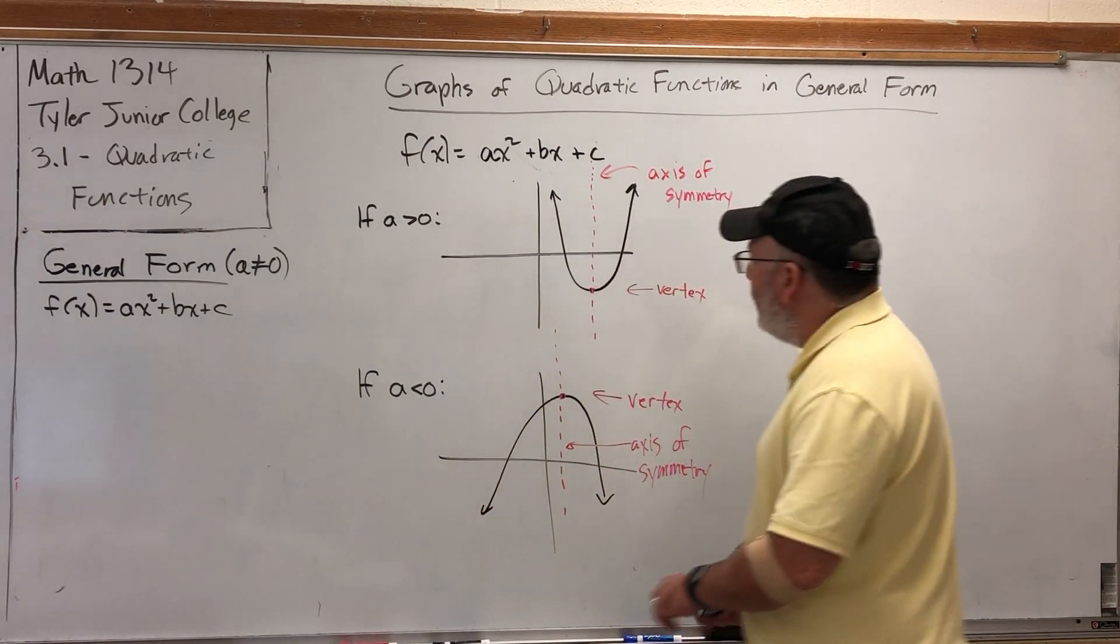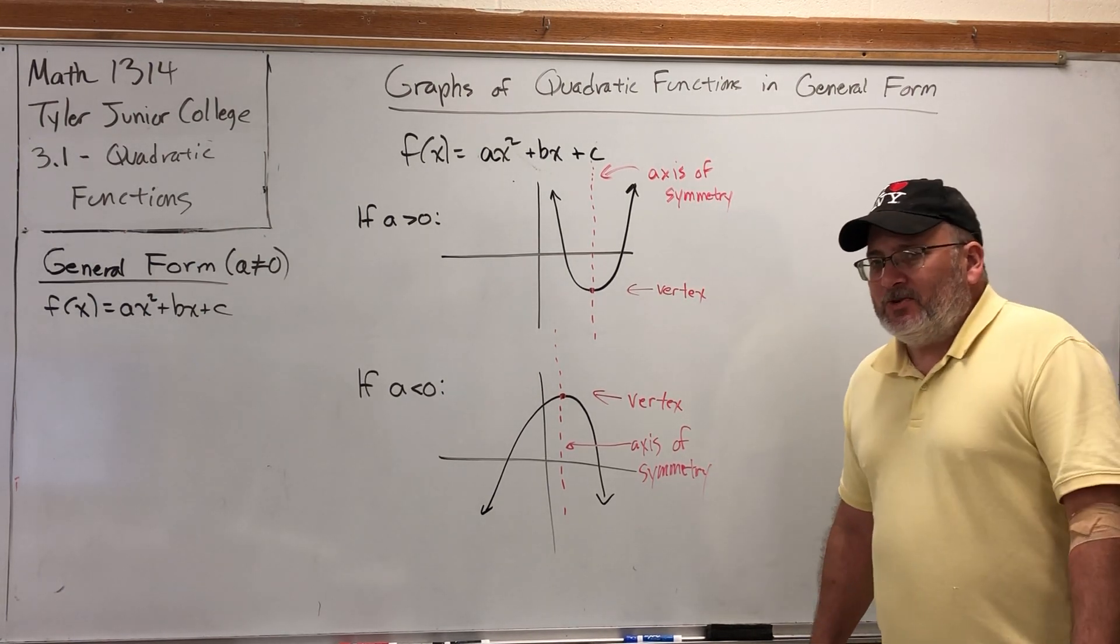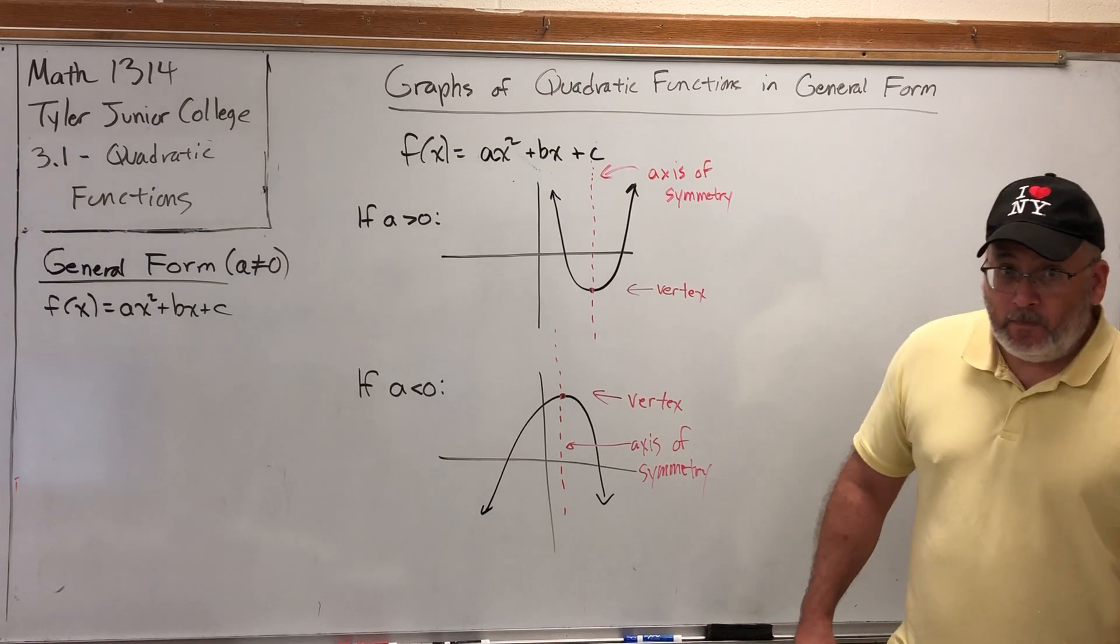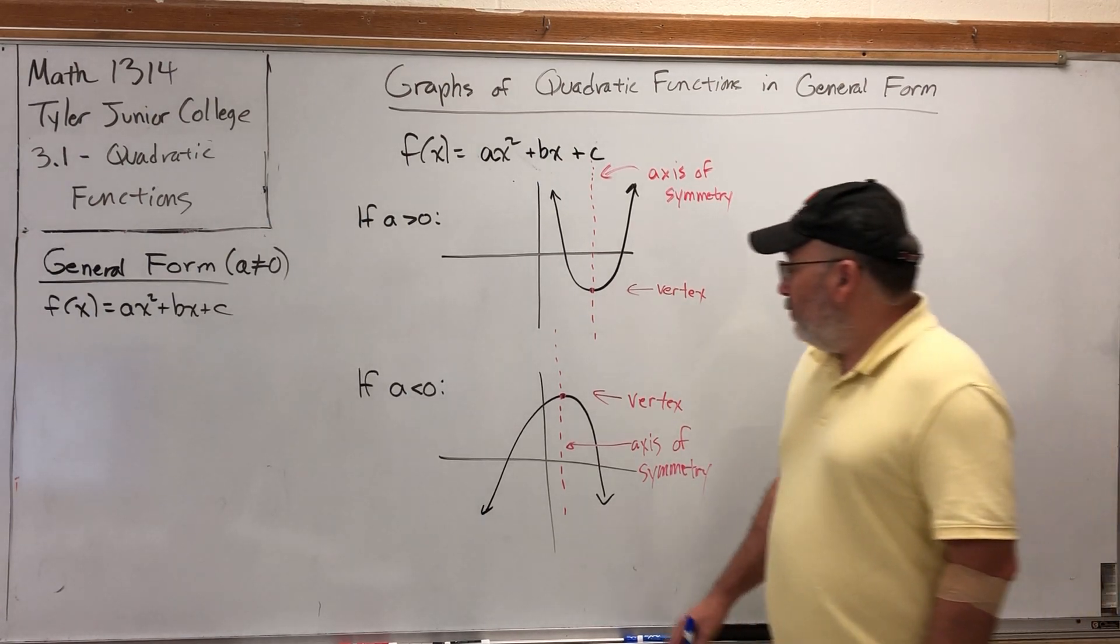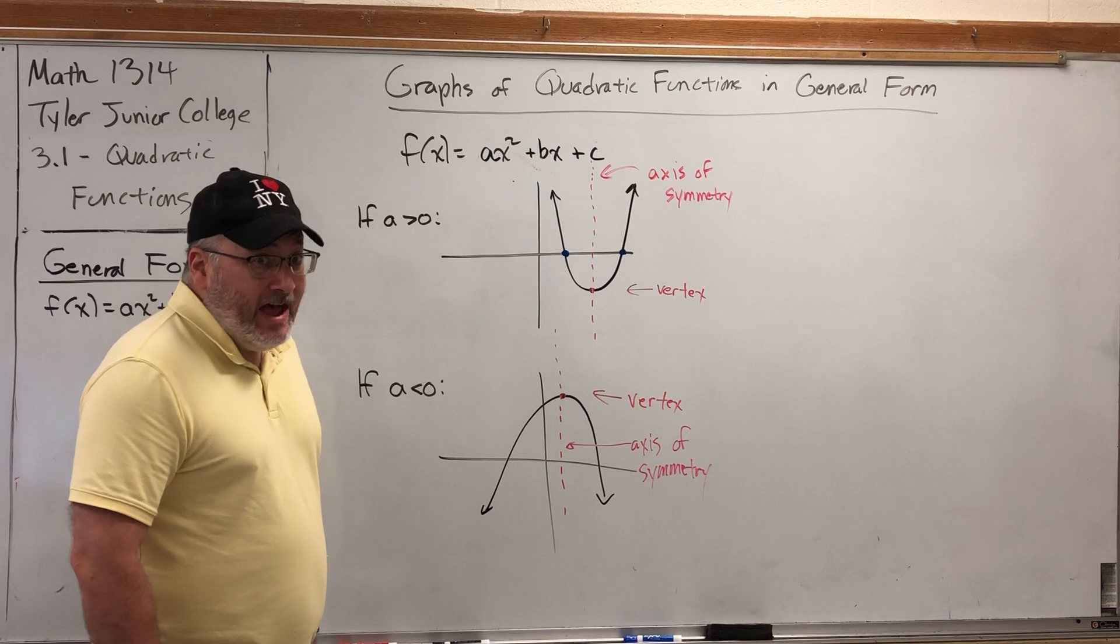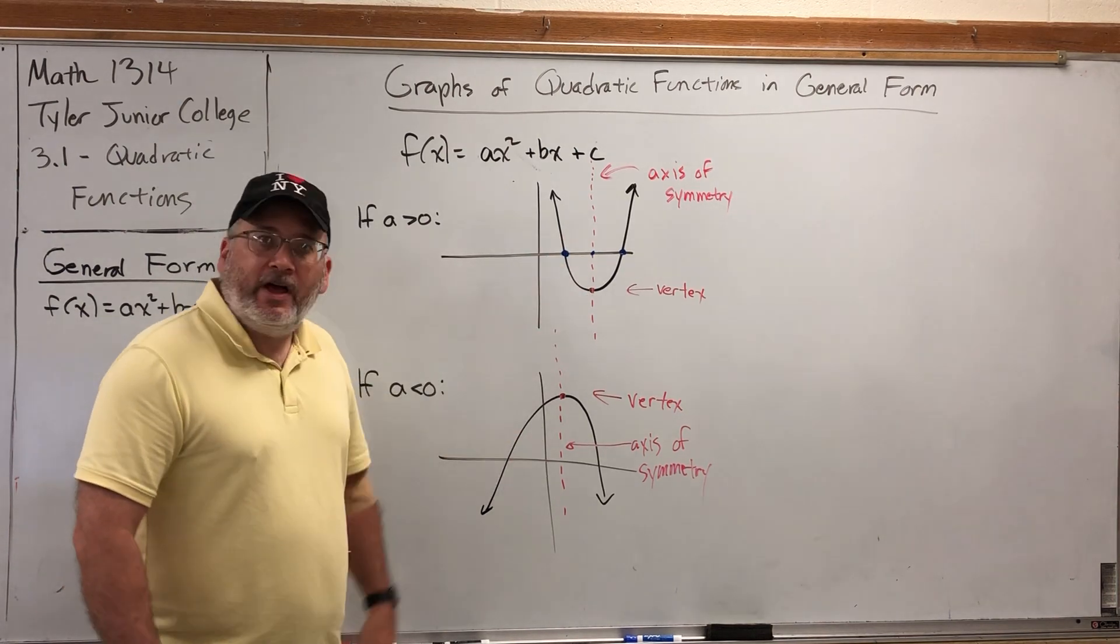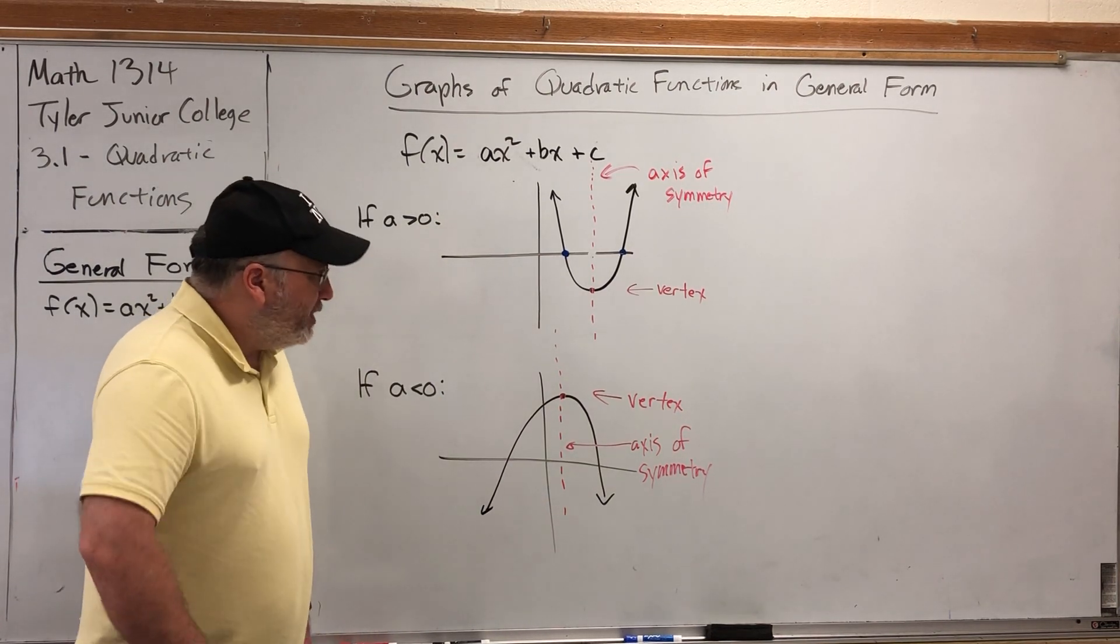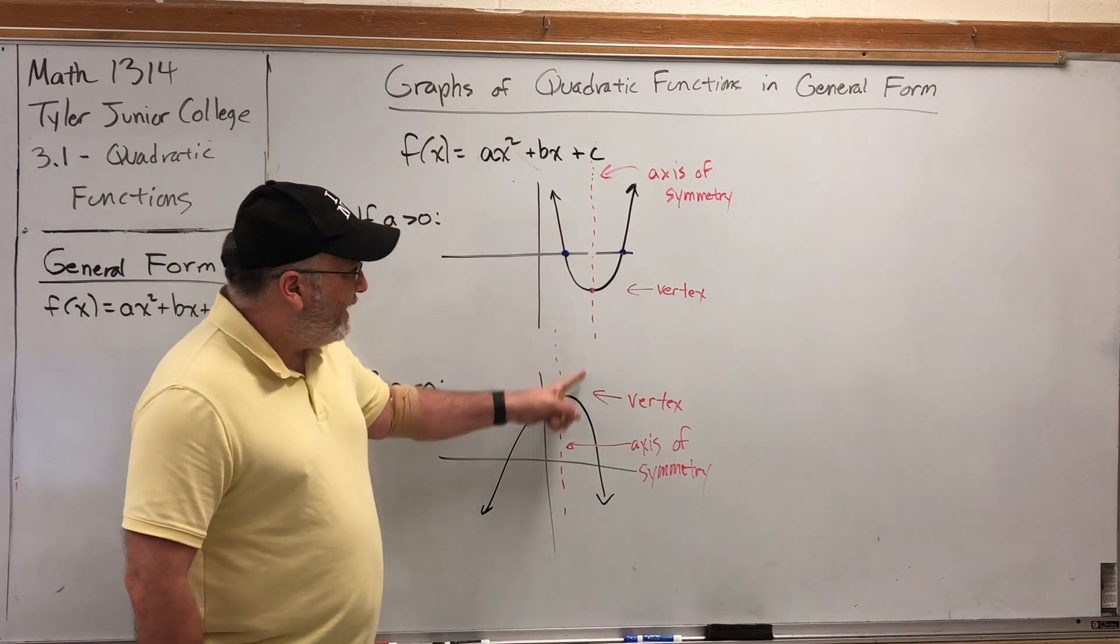Let me formulate a plan of attack for locating the vertex. One thing about the vertex is it's on the axis of symmetry, and every point on the left side has a mirror image on the right side. For example, these two x-intercepts are mirror images of each other. Their average, or their midpoint, would have the same x-coordinate as the vertex. So if we can represent the x-intercepts, their midpoint would tell us exactly where the vertex is.